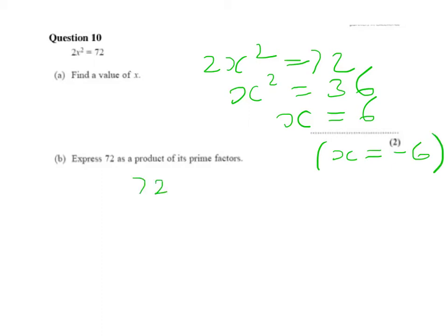Right, 72 into prime factors. Well, 72 equals 8 times 9, which equals 2 times 2 times 2 for the 8, and 3 times 3 for the 9. That is 72 as a product of prime factors.